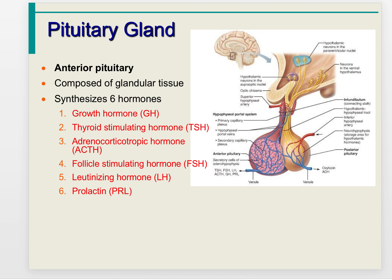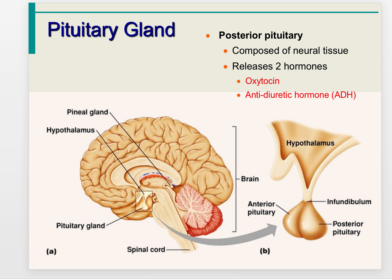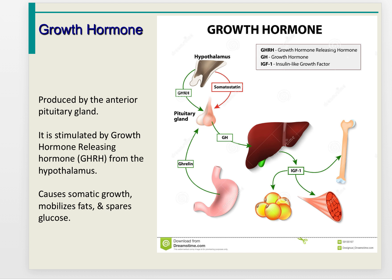The anterior pituitary is composed of glandular tissue and produces six hormones: growth hormone, thyroid-stimulating hormone, adrenocorticotropic hormone, follicle-stimulating hormone, luteinizing hormone, and prolactin. The posterior pituitary is composed of neural tissue and releases two hormones: oxytocin and antidiuretic hormone, or ADH.